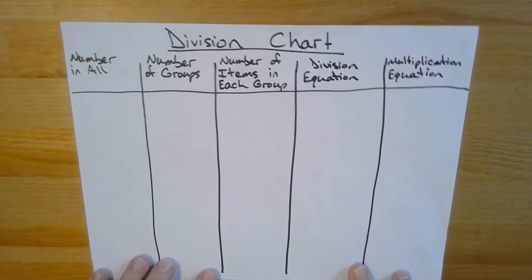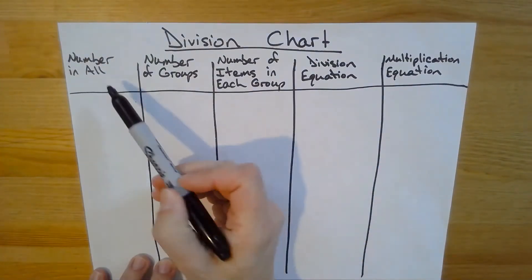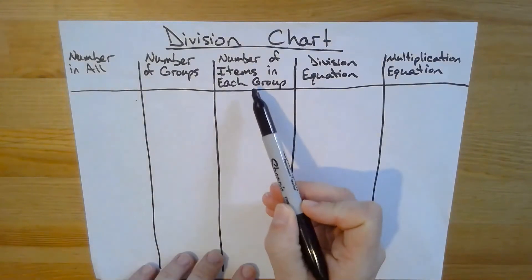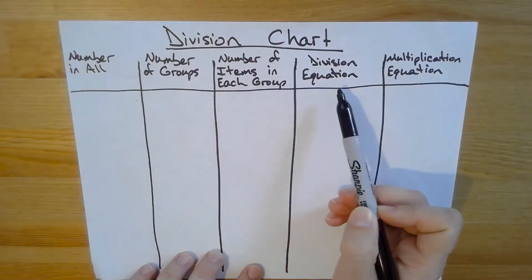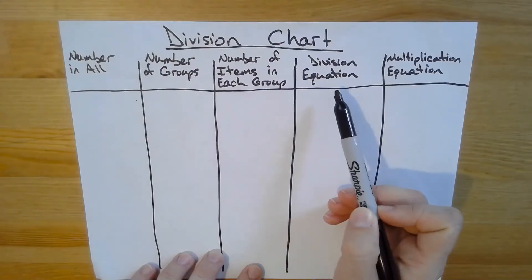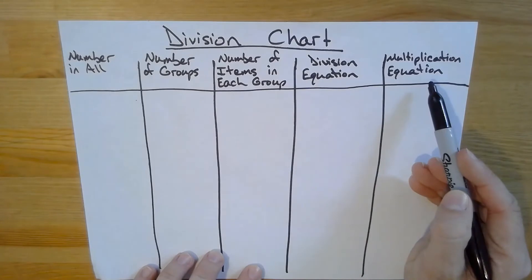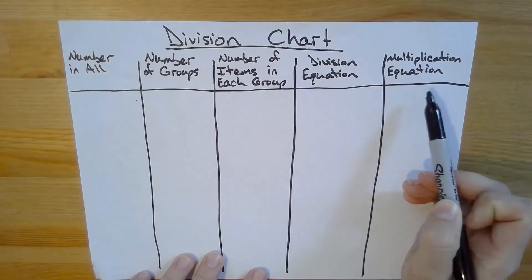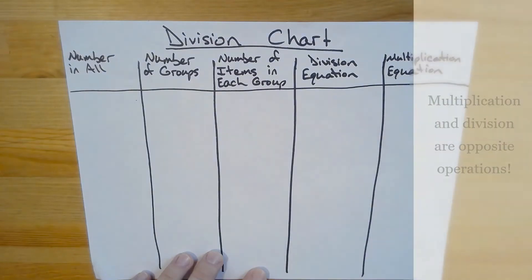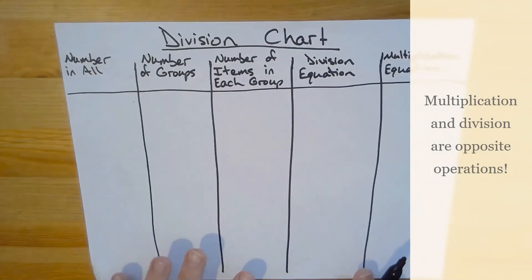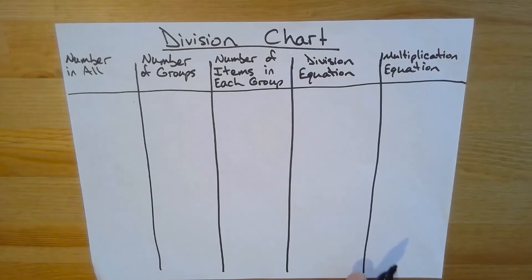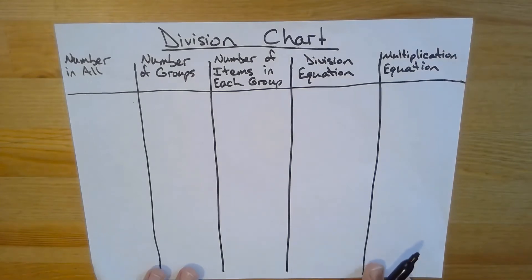Your chart will have five columns that will be labeled: number in all, number of groups, number of items in each group, division equation, and finally multiplication equation. If I'm solving division problems, why do you think I would have a column for multiplication equation? Feel free to pause the video so you can remember what your chart should look like while you create your own. Then let's get started with our first example problem.